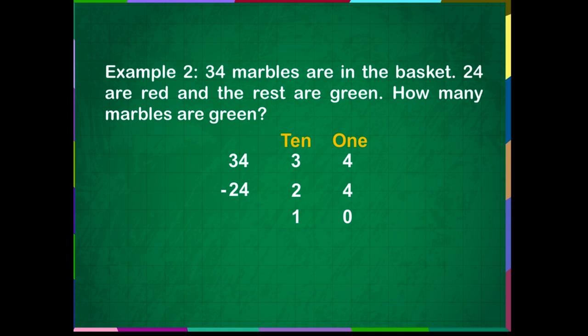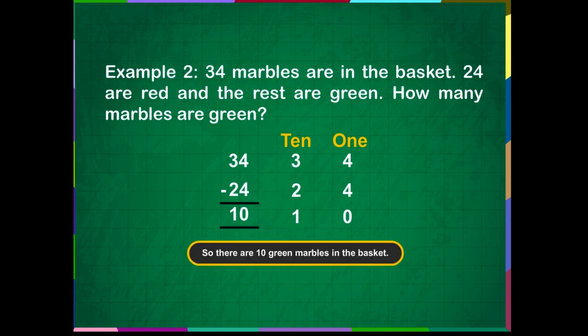So, 34 minus 24 is equal to 10. There are 10 green marbles in the basket.